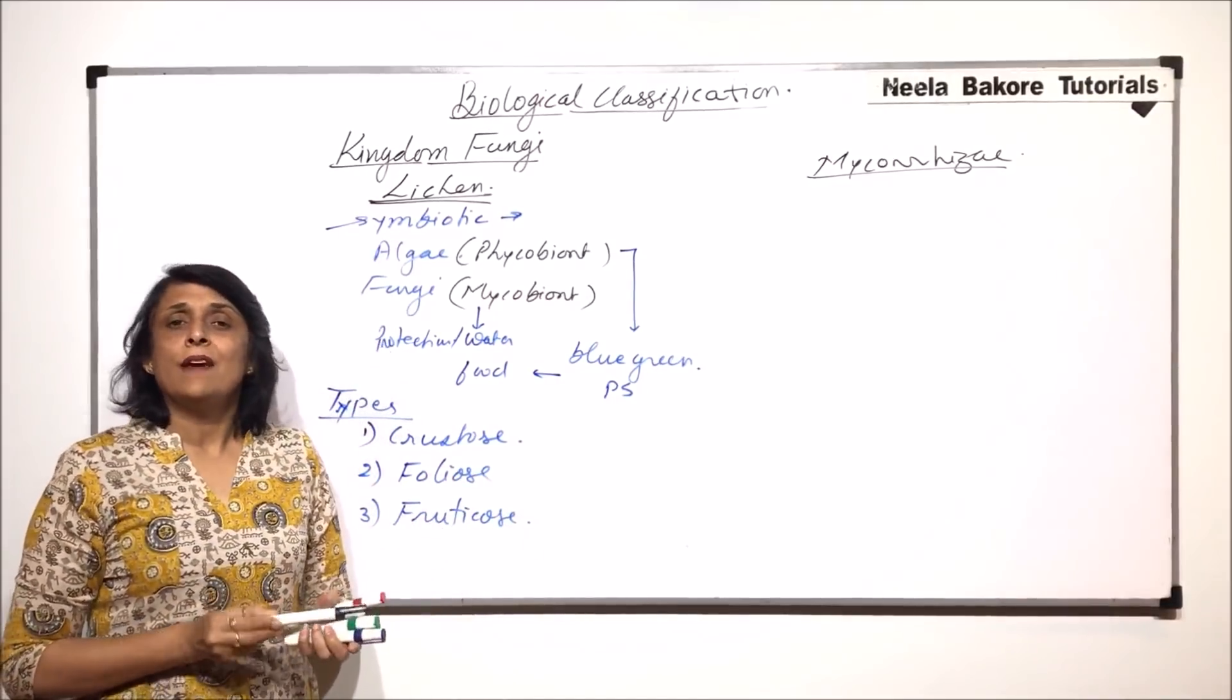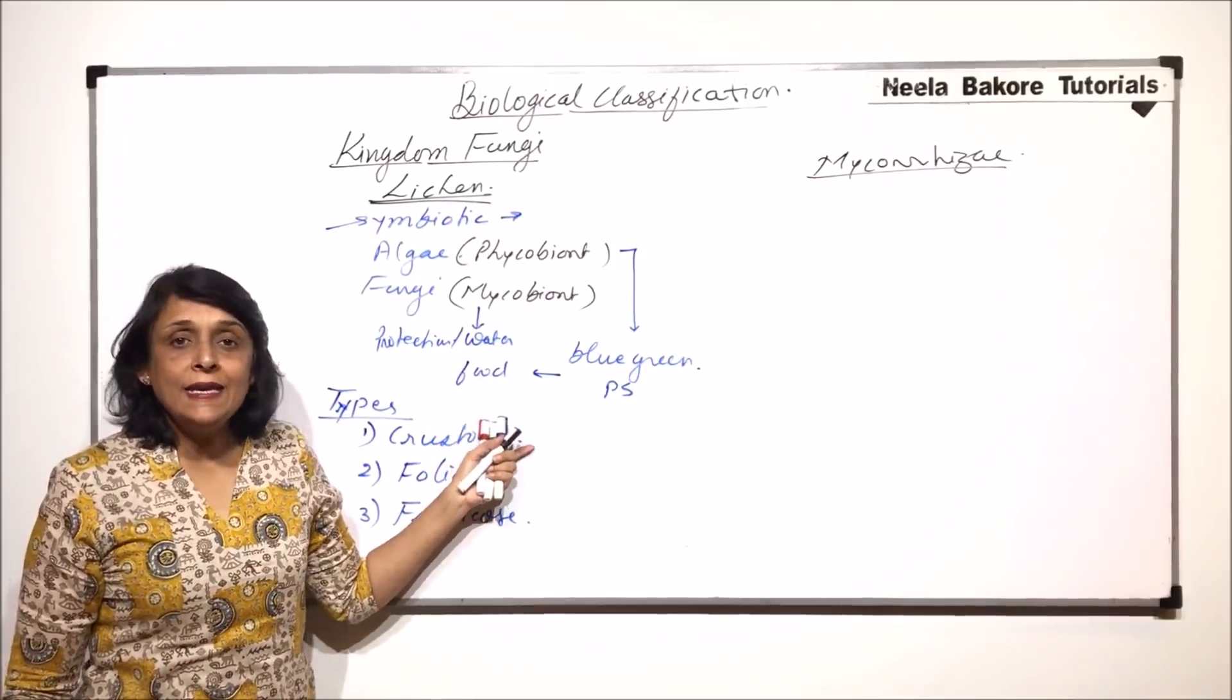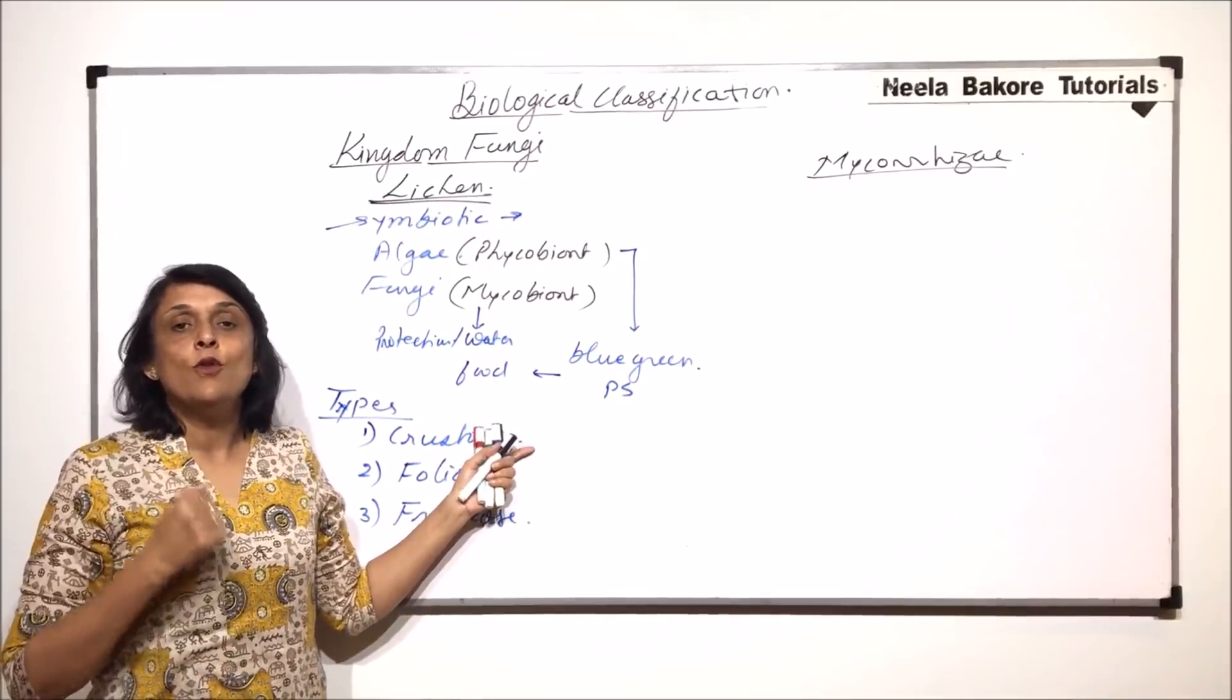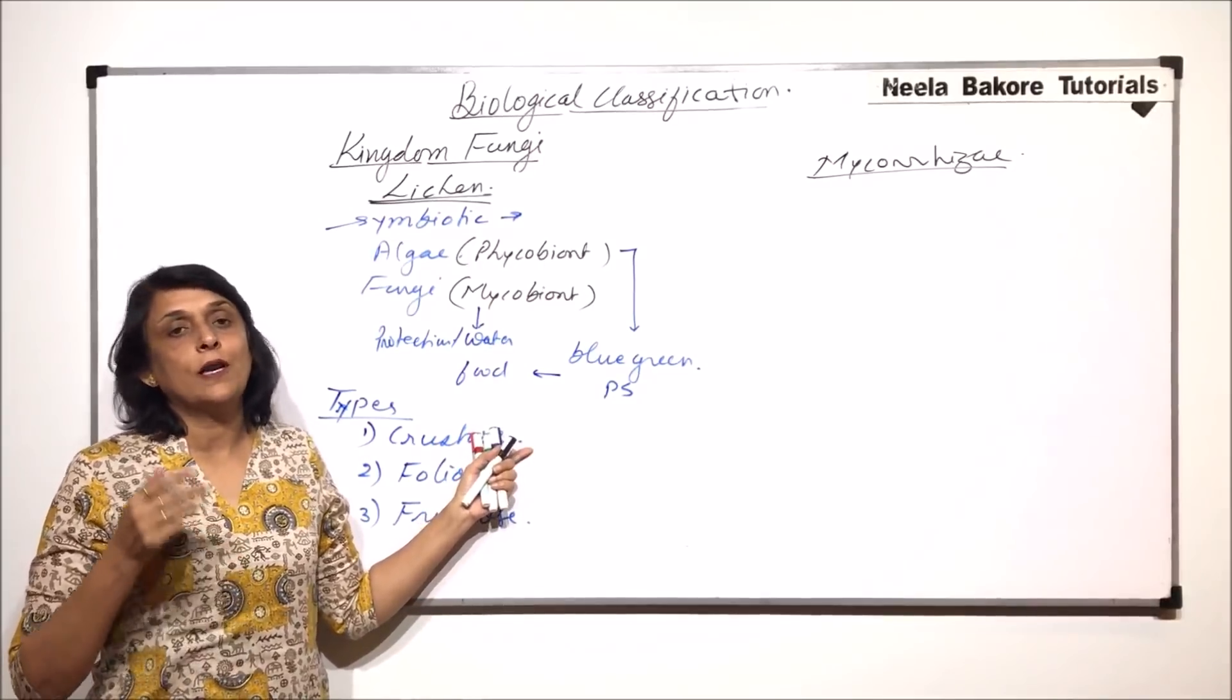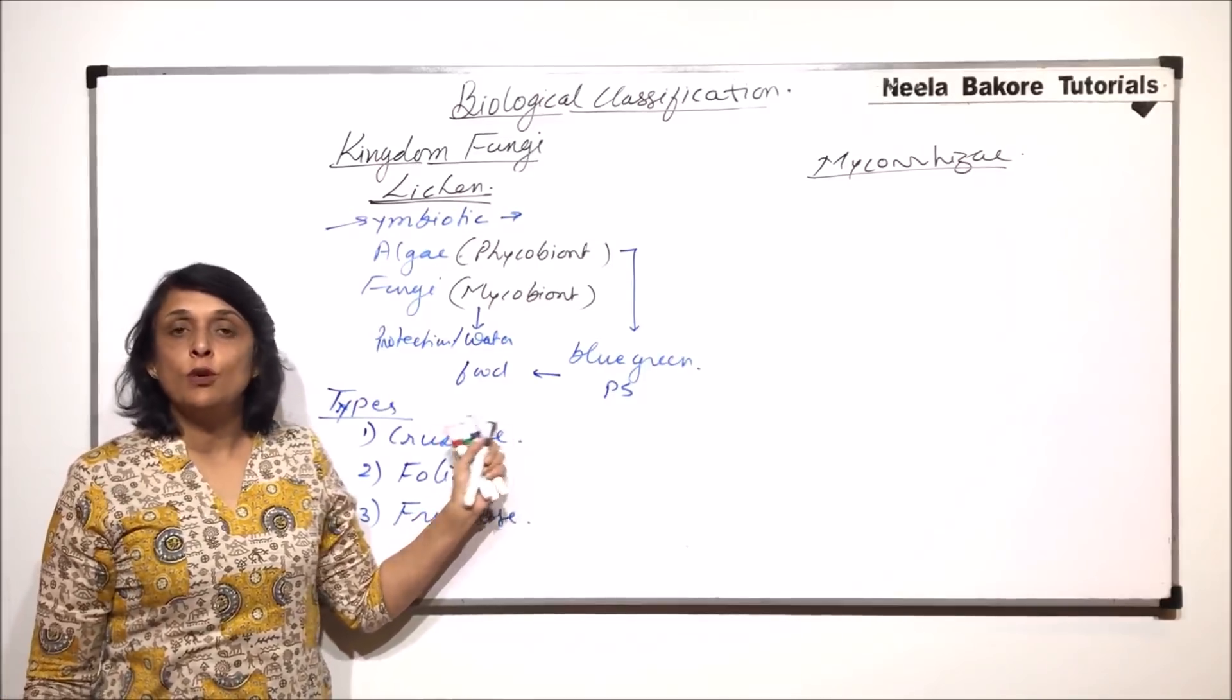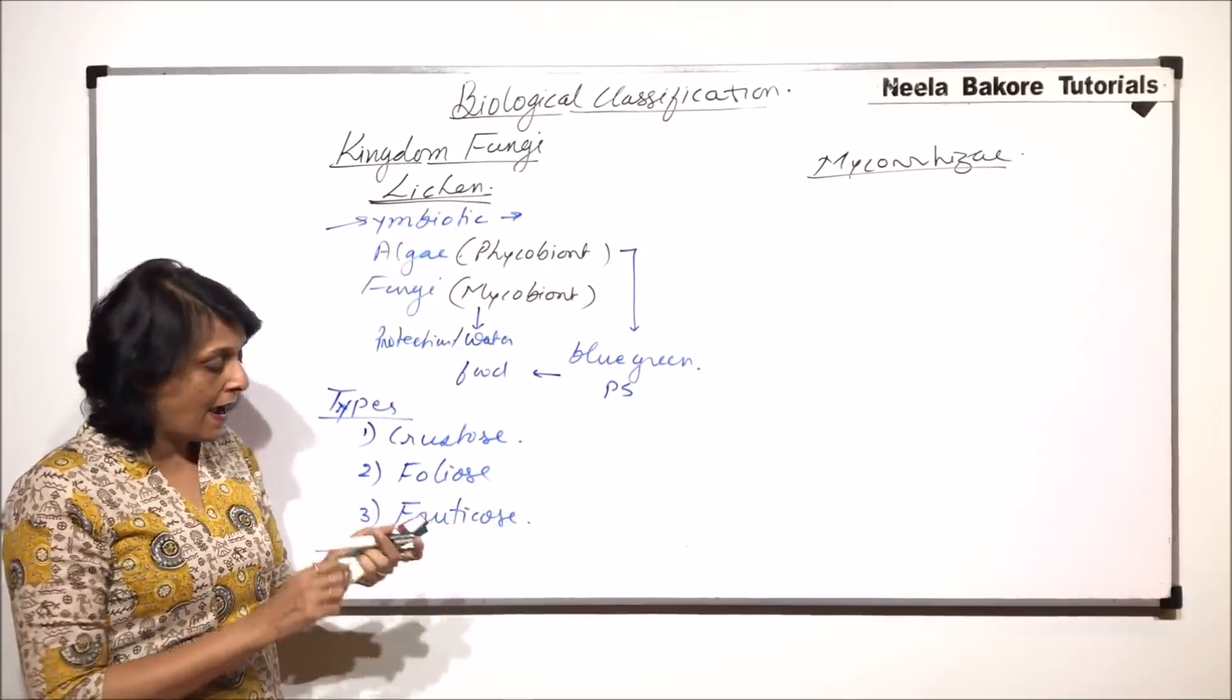Crustose lichens are very flat and they can grow on any surface, even on a rock where there is no organic matter, no water, and no soil. That is why they are the pioneers when it comes to succession.